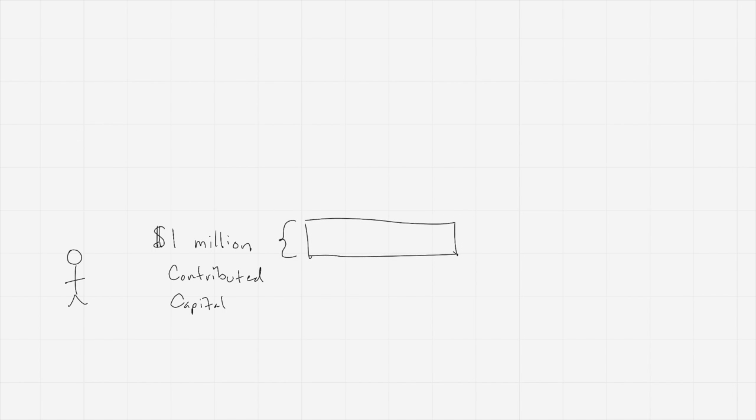And that contributed capital is used to buy a million dollars worth of assets. The land, the equipment, the supplies. Let me make this box representing our assets a little bit neater here. So we have our assets, and these assets are used to produce income.